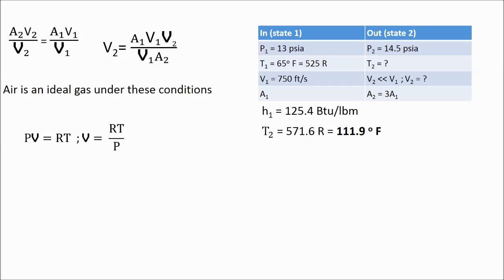Since air is an ideal gas under these conditions, we can use the ideal gas equation, PV equals RT. Solving for the specific volume, we get RT over the pressure. Applying this to both the entrance and the exit velocities, we get v2 over v1 is equal to p1 T2 over p2 T1.